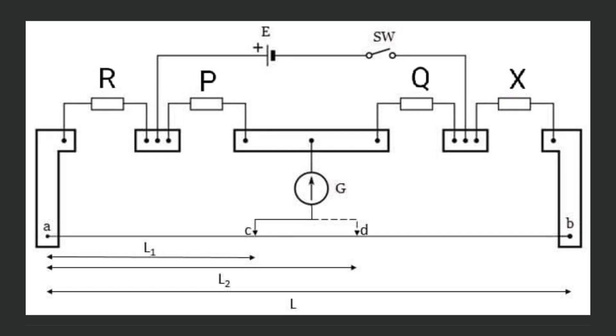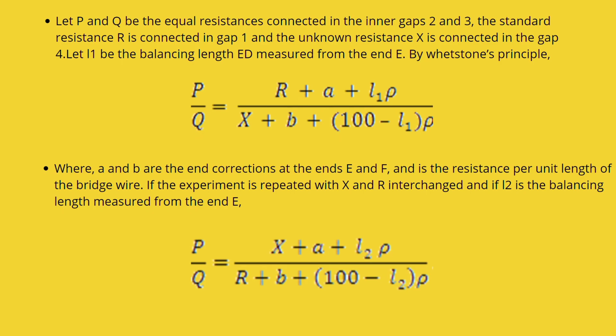In the next step, the resistance X and R are interchanged and this time balance is obtained by sliding the contact at point D at a distance of L2 from point A. So, again, P by Q equals X plus A plus L2 rho divided by R plus B plus 100 minus L2 rho.